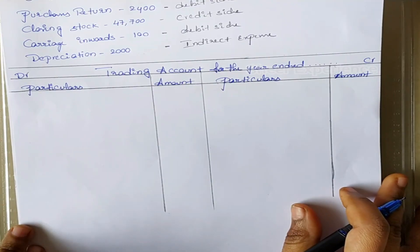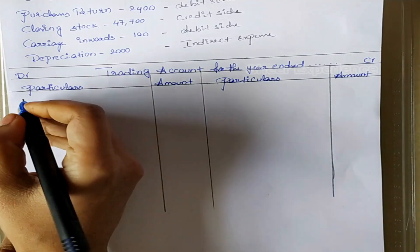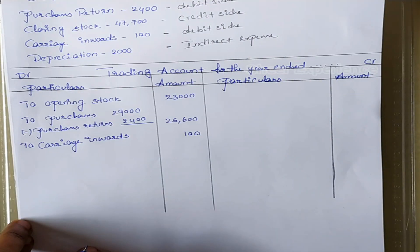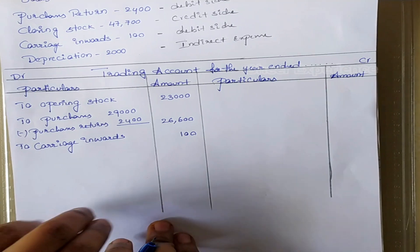Now we will prepare the trading account. Opening stock, purchases, purchase returns, and carriage inwards are mentioned on the debit side. Here we are deducting purchase returns from the purchase amount to get the net purchase value.